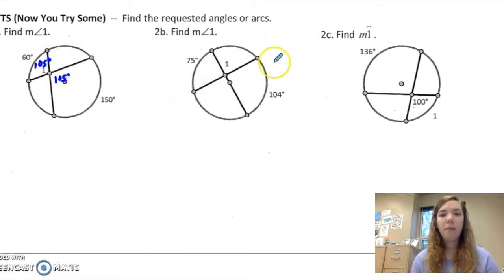75 plus 104 divided by 2 is 89.5 for this angle. So the one we're missing, I have to take 180 minus 89.5 is 90.5.